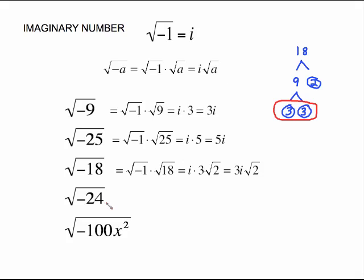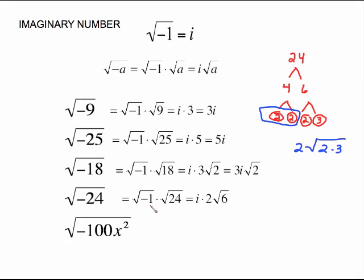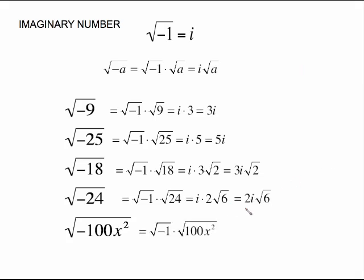Same procedure here. Write it as the product of the negative times 24. Square root of negative 1 is our i. Do your factor tree on 24. We had a pair of 2, so a 2 came out. We had a 2 and a 3 left over inside, which gives us 2i√6.